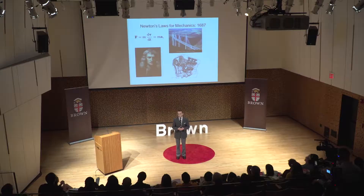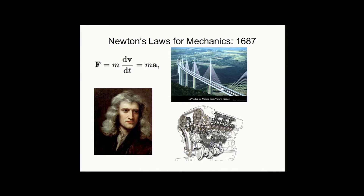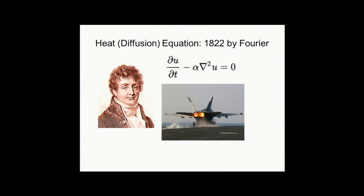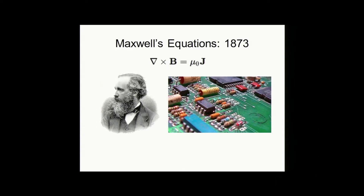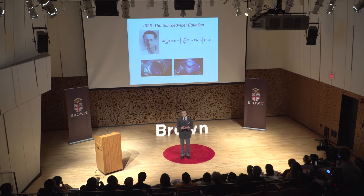To motivate you: all of the great technology that we enjoy today is due to the discovery of physical laws. These are mathematical models consisting of rules and equations that govern our physical world. This is one of Newton's laws for classical mechanics. This is the heat or diffusion equation discovered by Fourier more than a century after Newton. This is one of Maxwell's equations, and these govern electromagnetism — they're the basis for all the electrical engineering and wireless technology we have today. And this is the Schrödinger equation, which governs quantum mechanics — for example, the particles in a nuclear reactor, the electrons in your battery, the semiconductors that make your computer possible.